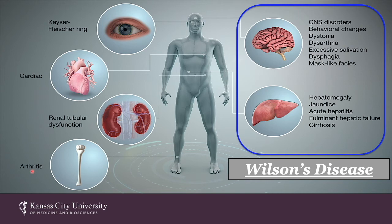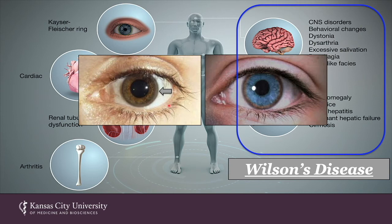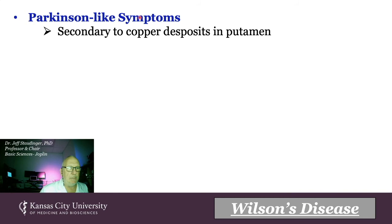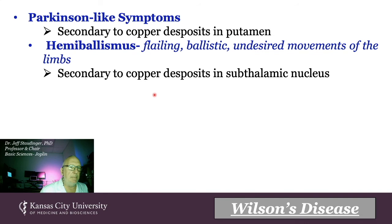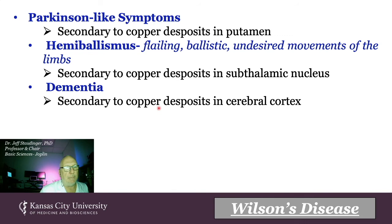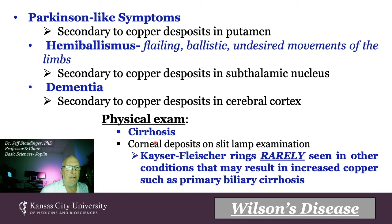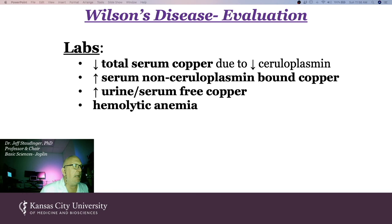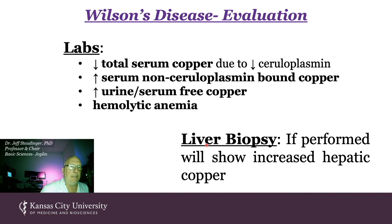Kaiser-Fleischer rings appear around the periphery of the iris, much easier to see in blue eyes. Wilson's disease produces Parkinson-like symptoms after copper deposits in the putamen, hemiballismus after deposition in the subthalamic nucleus, and dementia after deposition in the cerebral cortex. On physical exam, these patients will have cirrhosis of the liver and corneal deposits. Kaiser-Fleischer rings are rarely seen in other conditions — they're fairly indicative of Wilson's disease. In the face of mutant ATP7B, there is decreased total serum copper due to decreased ceruloplasmin, increased free copper in serum, increased urine free copper, and patients may present with hemolytic anemia. A liver biopsy will show increased hepatic copper.